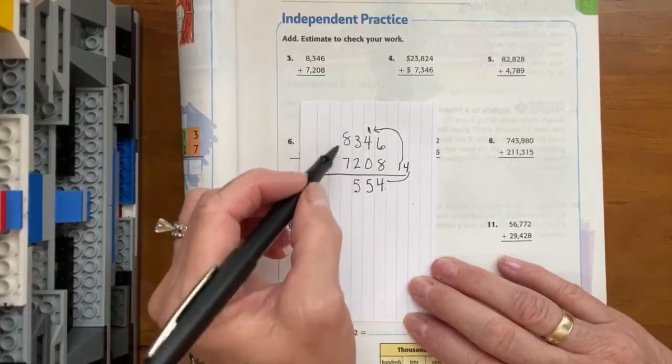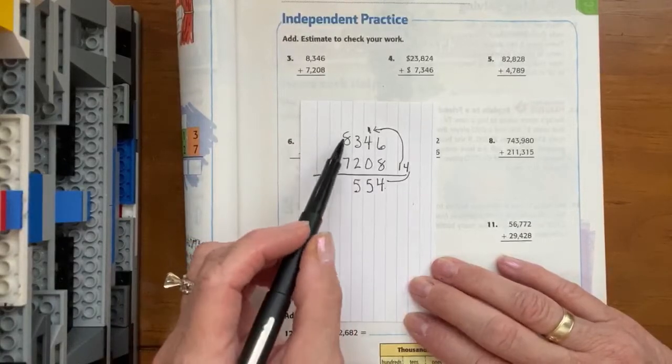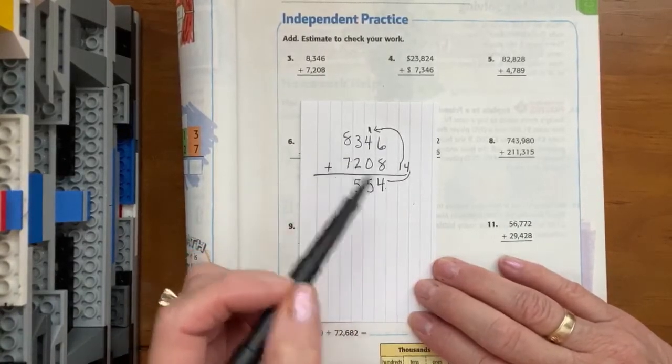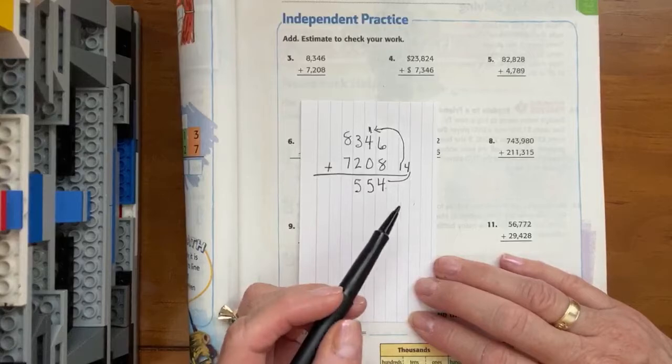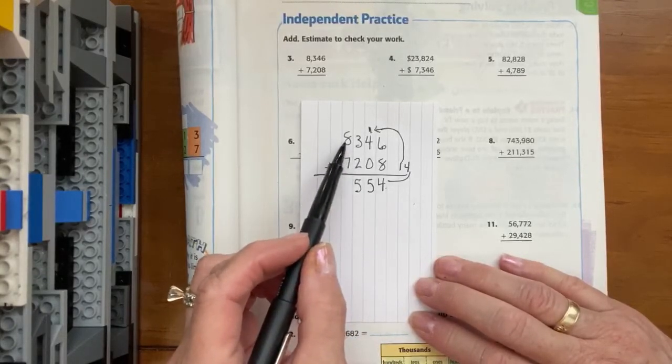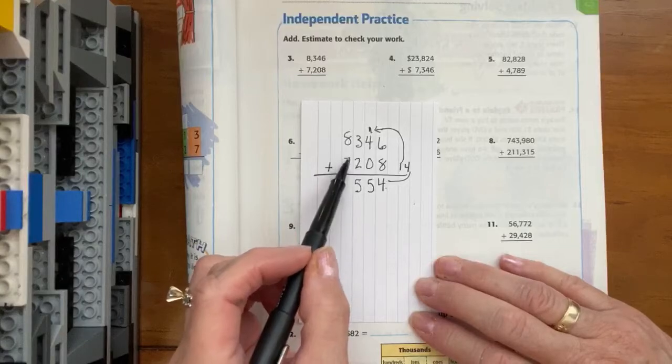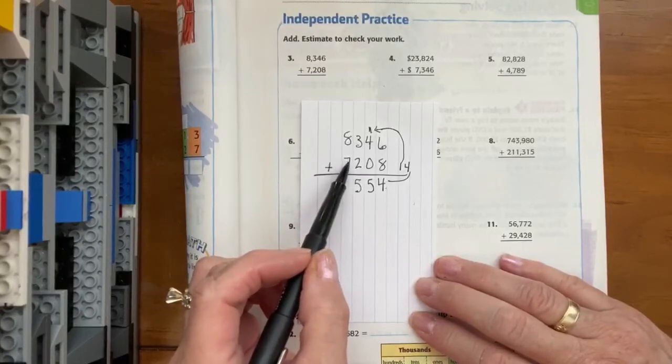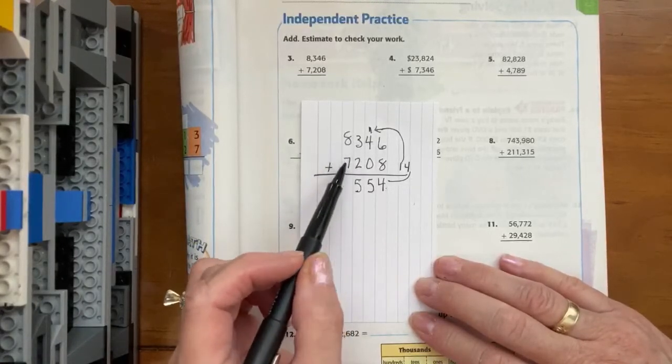And lastly, we move to our thousands and we can say eight plus seven is, it's one of those tough ones. So I'm going to say, I'm going to double eight, which is sixteen, and then take one off because this isn't really an eight, it's a seven. So I know that eight plus seven is fifteen.